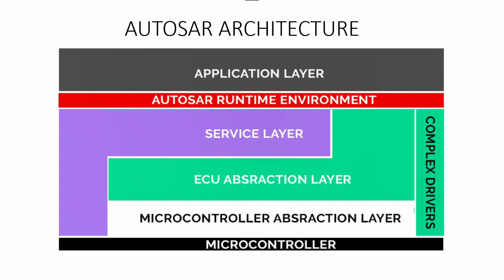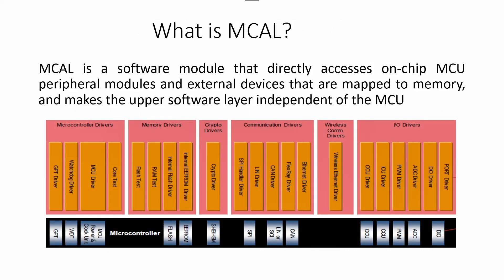Basically, AutoSAR Architecture has three layers: Application Layer, AutoSAR Runtime Environment, and Base Software. The Base Software can be divided into three more layers: Service Layer, ECU Abstraction Layer, and Microcontroller Abstraction Layer. In this video, we are going to discuss about Microcontroller Abstraction Layer. If you want to understand more about AutoSAR Architecture, you can watch my previous videos — I have mentioned all the videos in the description.